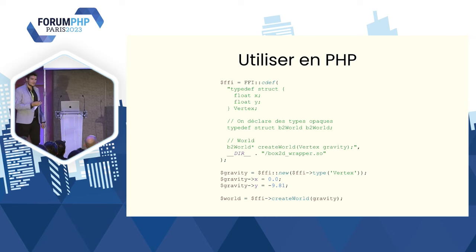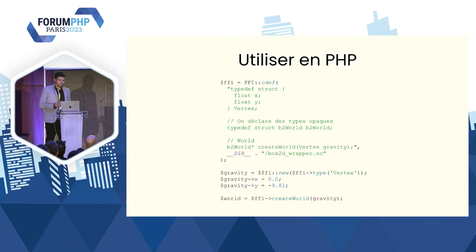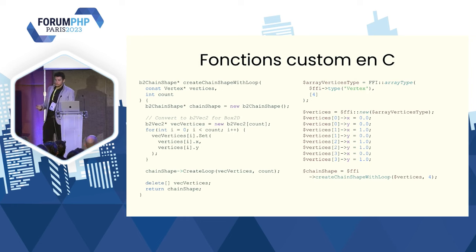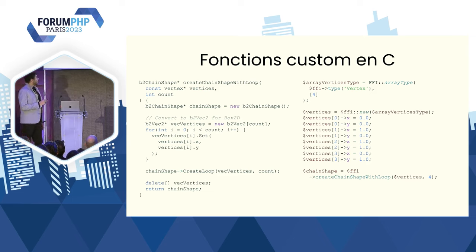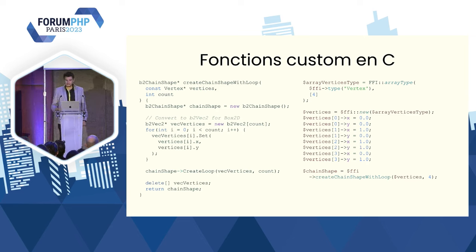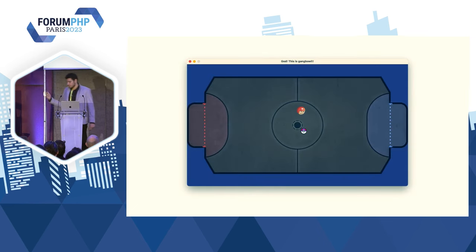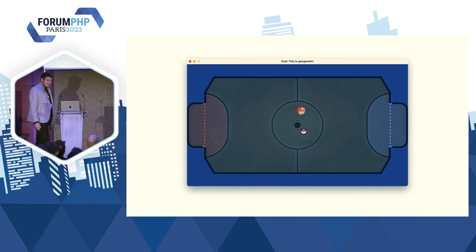Je suis obligé de passer un peu vite. Concrètement, ça fonctionne très bien et je vais pouvoir utiliser directement Box2D. On est content, on a gagné. Un petit tip : vu qu'on crée un wrapper intermédiaire entre les deux, on va pouvoir faire des fonctions qui génèrent plus de choses et nous évitent de devoir créer trop de bindings. Ça permet de faire des petites fonctions custom — cette fonction notamment était pour générer les murs de mon petit jeu, j'avais besoin que ça soit cadré dans un terrain de foot. On se retrouve avec notre petit jeu Gangball qui fonctionne, en pur PHP — et on est content de ça, même si ça ne sert vraiment à rien.